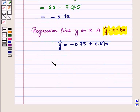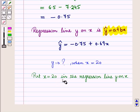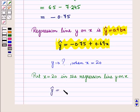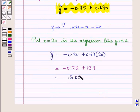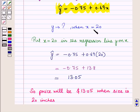Now we have to find the price (Y) when the size X = 20 inches. Substituting X = 20 into the regression line: ŷ = −0.75 + 0.69×20 = −0.75 + 13.8 = 13.05. So when the size is 20 inches, the expected price is 13.05 dollars.